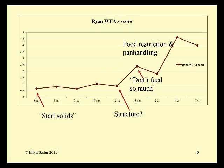Lack of structure: judging by what happened later, Ryan's parents were unlikely to have established structured meals and snacks when he needed them. Being allowed to eat whenever he wanted apparently undermined Ryan's ability to regulate food intake and grow appropriately. By 18 months he had gained quite a bit of weight — from about the 90th percentile to well above the 97th percentile. Rather than asking feeding questions and identifying the cause of Ryan's dysregulation, the doctor imposed food restriction when Ryan was about 18 months old, and his weight did dip down a little. But then he got the upper hand again and it really took off.